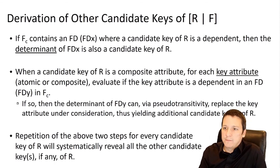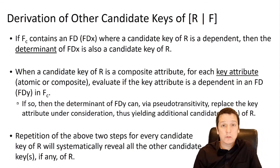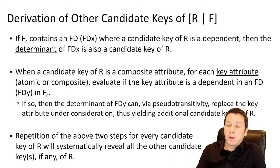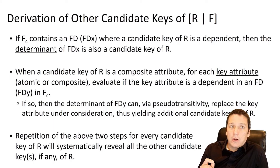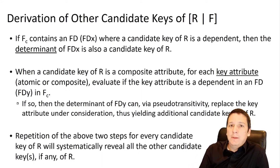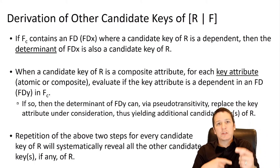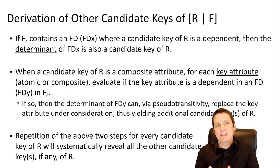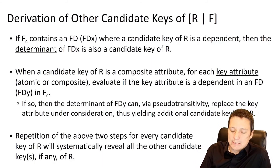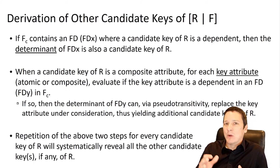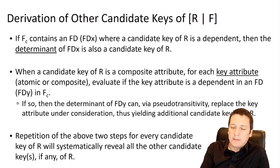One thing to know about candidate keys is that there can be more than one. We won't see that in this example tonight, but we will see it in examples next week and in assignment four. If any attributes that make up our candidate key are dependents in any of our functional dependencies, there may be additional candidate keys to derive. We work through this process repeatedly, deriving additional candidate keys, until it creates a loop — at which point we know we've found all candidate keys.